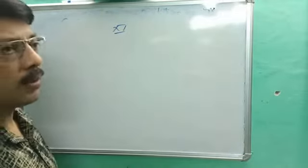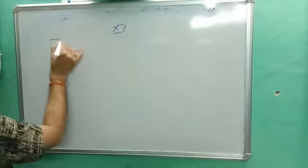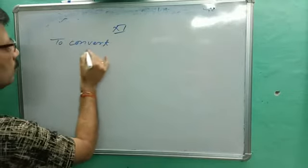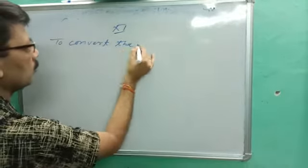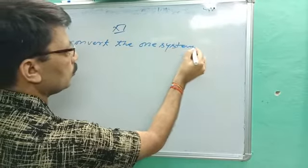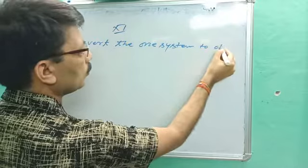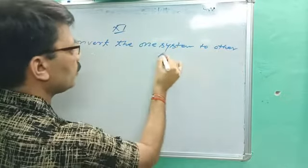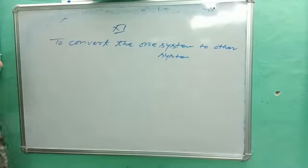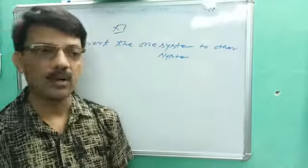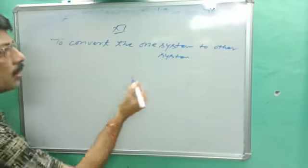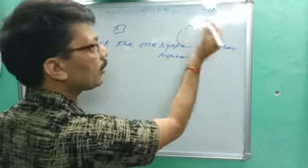The third application is to convert one system into another system using dimensional formula. First, let's see some conceptual points. As you know, there are three types of systems, but here we focus on two: MKS system and CGS system.